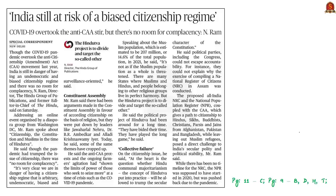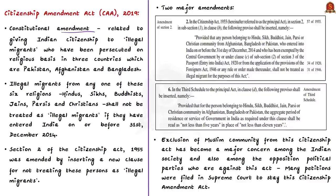Let us take up the next news article, which talks about a speech by the director of The Hindu Group of Publications. He opined that India is still in danger of having an undemocratic and biased citizenship regime, and there is no room for complacency — referring to the Citizenship Amendment Act (CAA) of 2019. This constitutional amendment relates to giving Indian citizenship to illegal migrants who have been persecuted on a religious basis in three countries — Pakistan, Afghanistan and Bangladesh — and individuals from any of these six religions: Hindus, Sikhs, Buddhists, Jains, Parsis and Christians. According to the amendment, they shall not be treated as illegal migrants if they entered India on or before 31st December 2014.